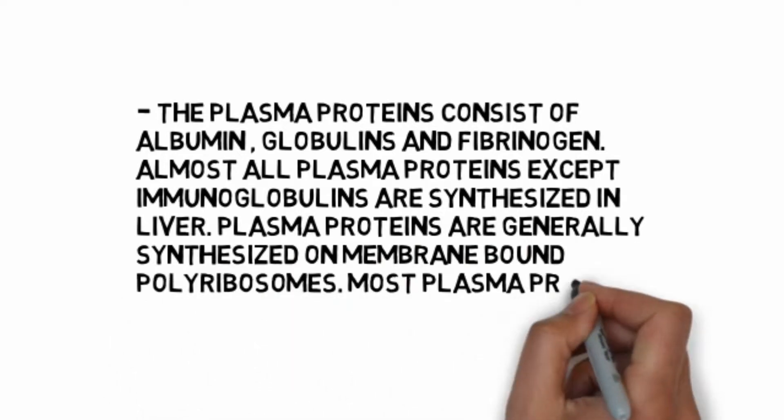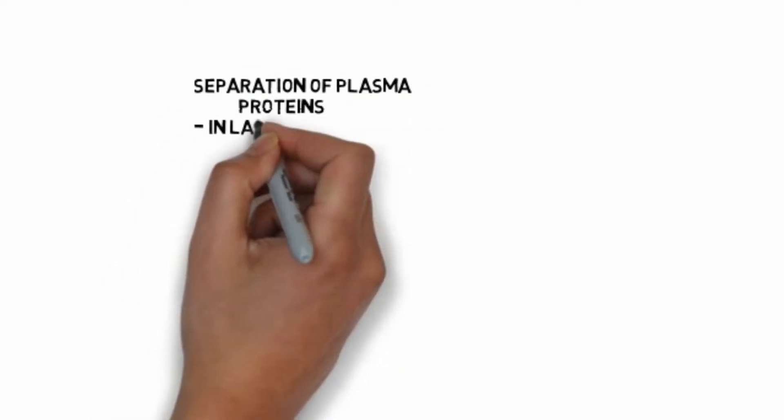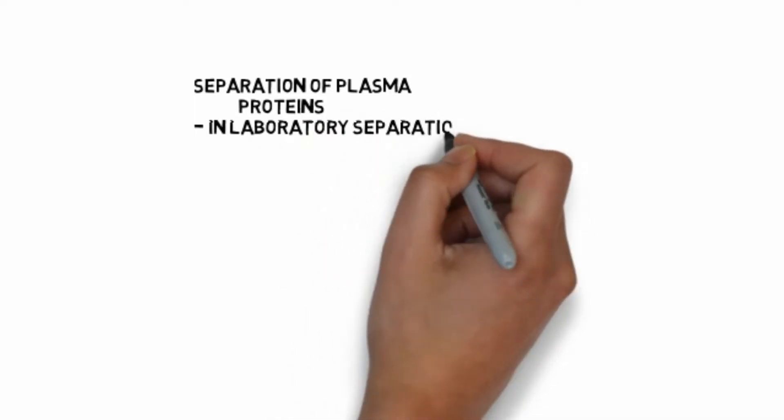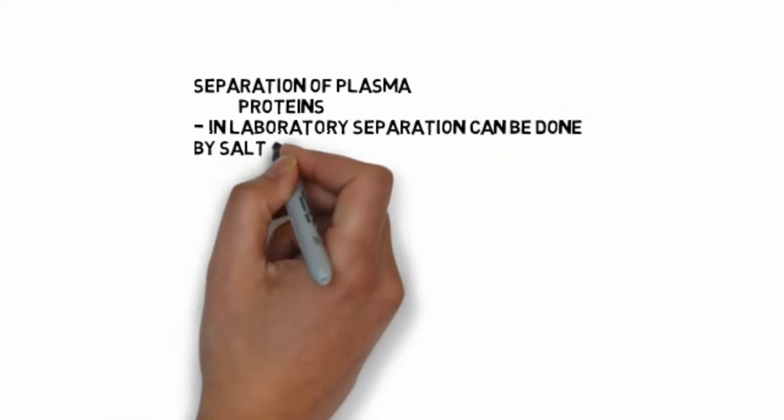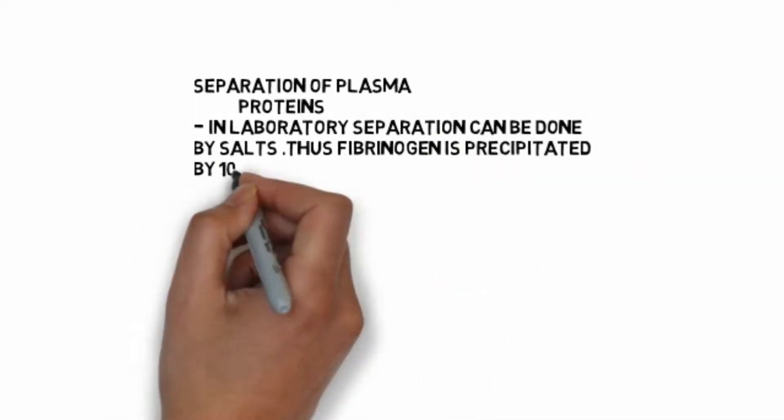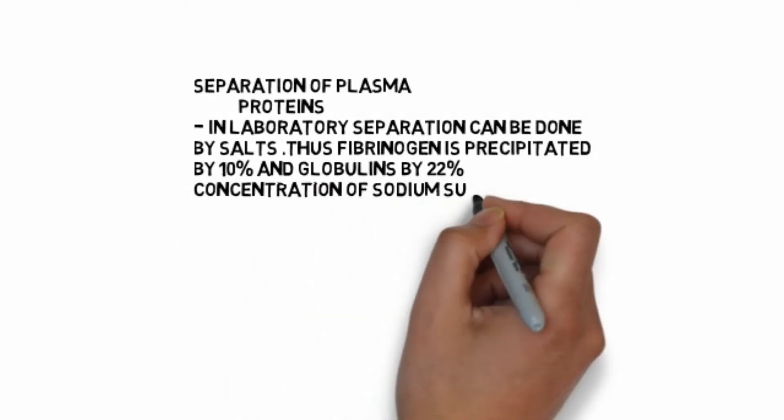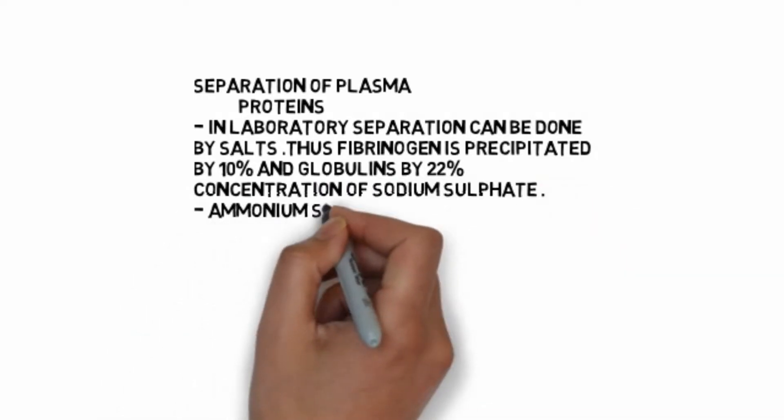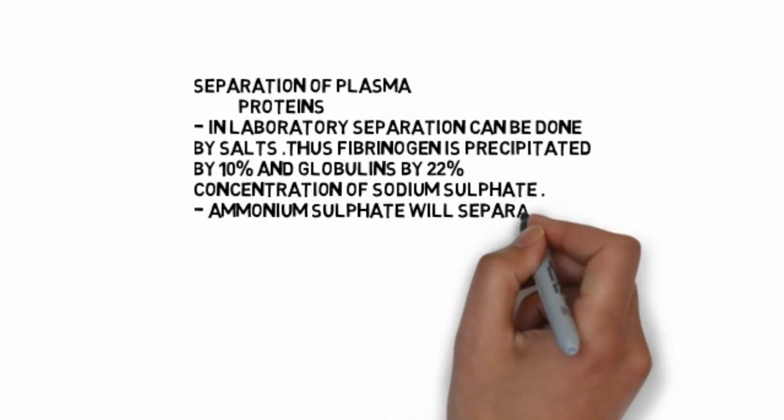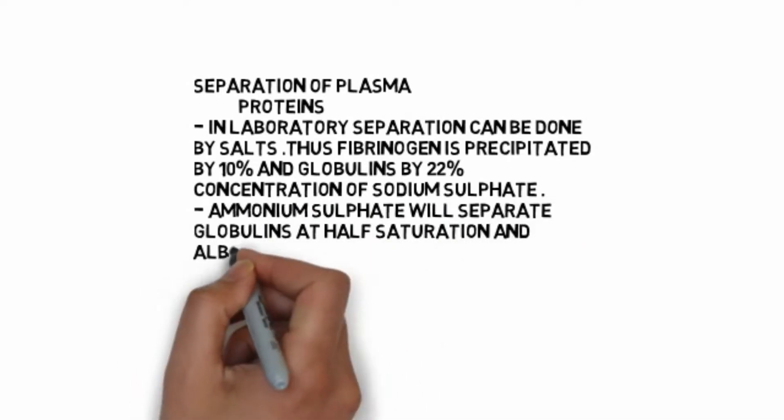Separation of plasma proteins in laboratory can be done by salts. Fibrinogen is precipitated by 10 percent and globulin by 22 percent of sodium sulfate. Ammonium sulfate will separate globulin at half saturation and albumin at full saturation.